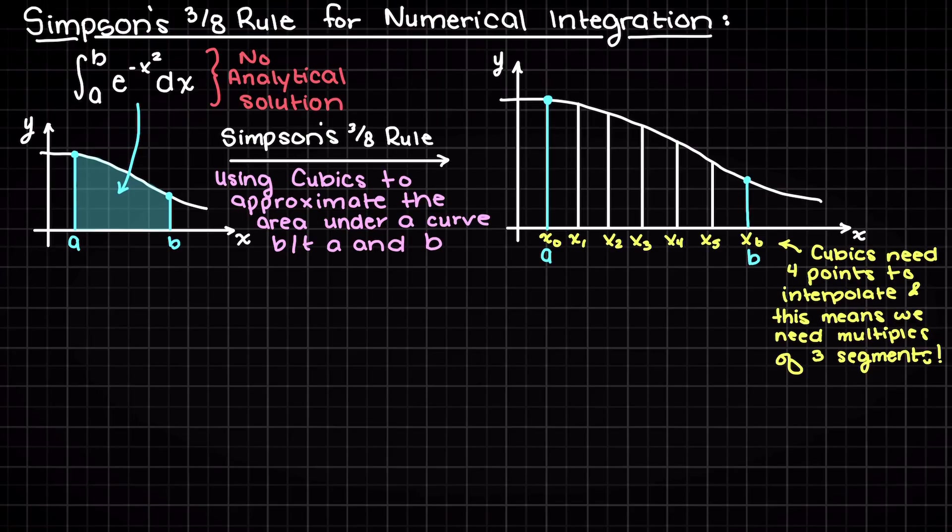To make this more clear, let's divide up our area of interest here into six equal subsections. Then we will have one cubic polynomial, p1 of x, fit to points x0, x1, x2, and x3. Then this pink area here between x0 and x3 is our first area of approximation of our definite integral between a and b.